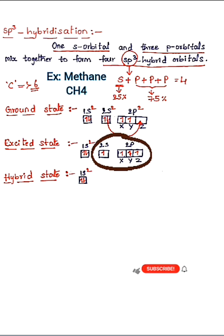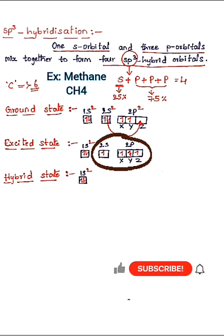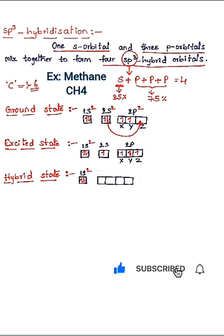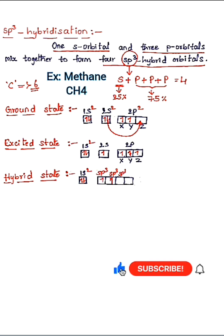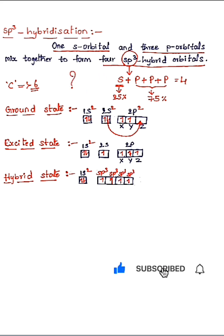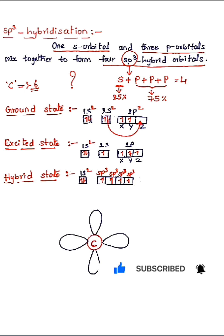The 2s orbital and the three 2p orbitals (x, y, z) mix together to form four sp3 hybrid orbitals. The four unpaired electrons are placed in these four hybrid orbitals, each with the same spin. This gives the first, second, third, and fourth sp3 orbitals, each containing one electron.